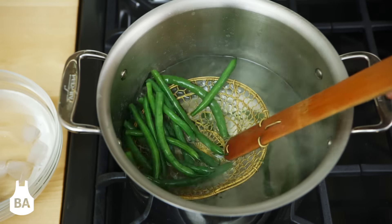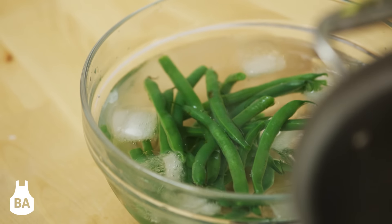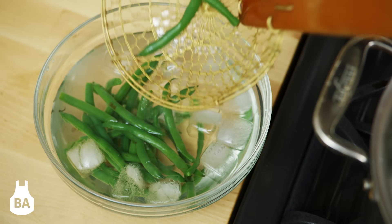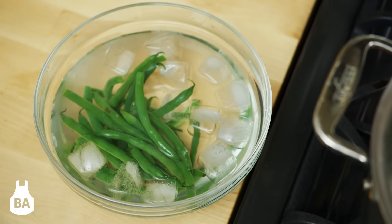Last, when the vegetables have cooked for a couple of minutes, we plunge them directly into a bowl of ice water. This will not only stop the cooking process, but it will set the color to a vibrant green.